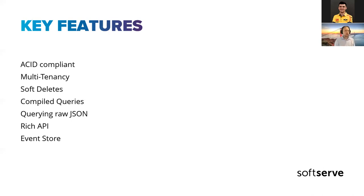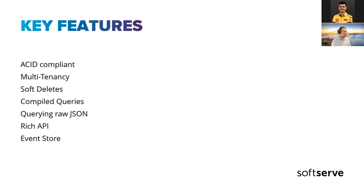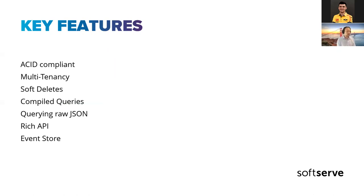Marten also has a rich API and provides flexibility through different types of sessions. This is semantically helpful: when you only want to read, you create a read session; when you want dirty-tracking, you use another type of session. A very big feature it also has is event store support, which we'll talk about shortly. These are just features I find interesting — when you start working with Marten you'll probably find other things interesting to you as well.